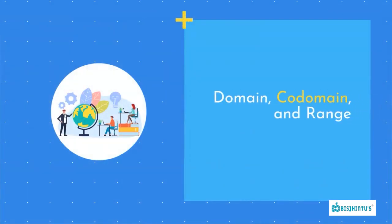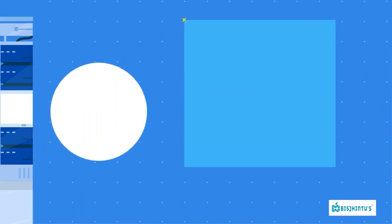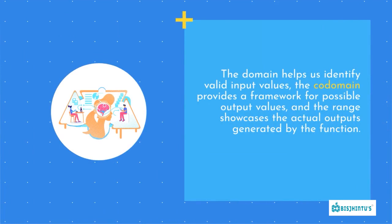Domain, Codomain, and Range. Functions are characterized by their domain — input values — codomain — possible output values — and range — actual output values. The domain helps us identify valid input values, the codomain provides a framework for possible output values, and the range showcases the actual outputs generated by the function.